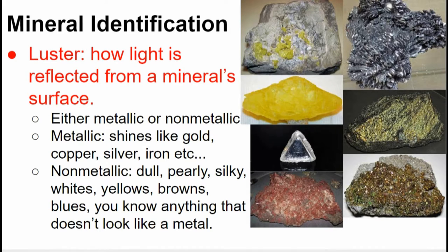The next test you can use is called the luster test. What is luster? Luster is how the light is reflected from a mineral surface. It's going to be either metallic or non-metallic — sometimes people might call it sub-metallic. Metallic minerals shine like gold, copper, silver, and iron. If it does not look like gold, copper, silver, or iron, it is a non-metallic mineral. Non-metallics look dull, maybe like a pearl, or silky. Your whites, yellows, browns, and blues are going to be non-metallic. Anything that doesn't look like it's metal is probably a non-metallic mineral. In fact, if in doubt when you're trying to classify minerals, guess that it's non-metallic.